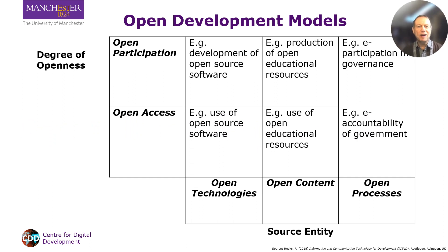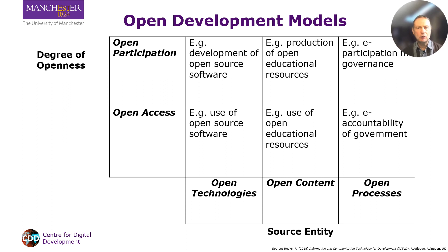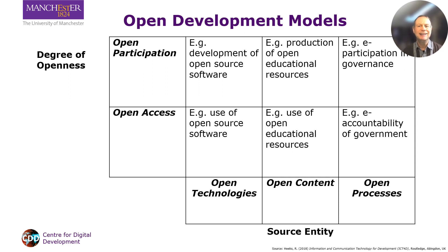So what are open models? I'll give some examples in a moment but we can classify those models on the basis of the matrix shown. The vertical dimension shows how open the model is. Open access means people can make use of the source, and open participation means people can engage in creation of the source.